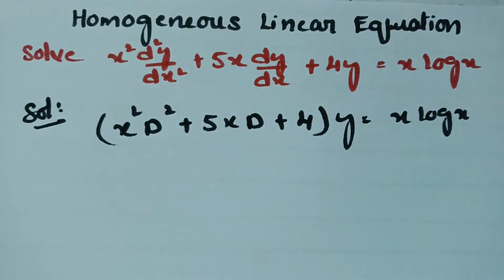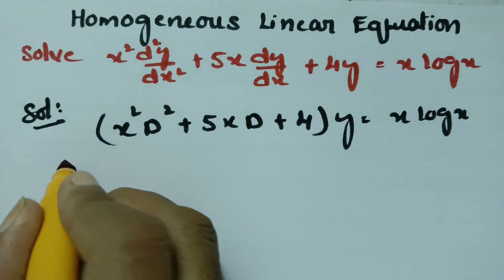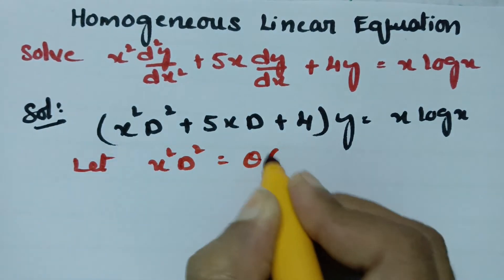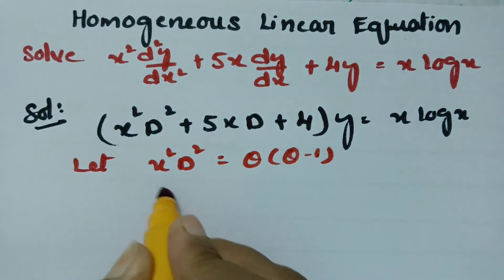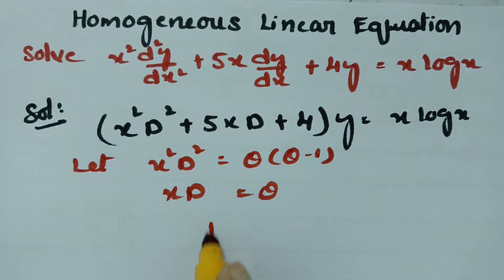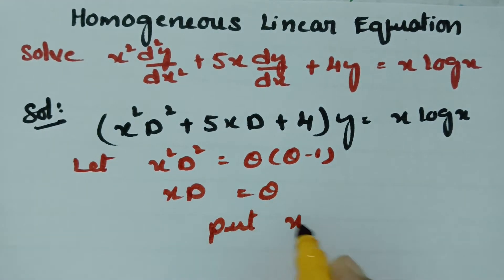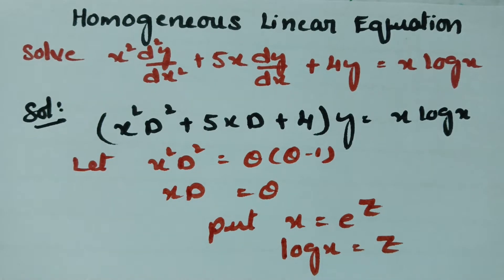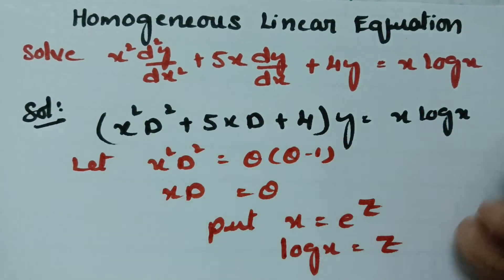Here, let x squared D squared equal theta times (theta minus 1), and xD equal theta. Put x equal to e to the power z. Taking log on both sides, log x equals z. Substitute all these into equation 1.